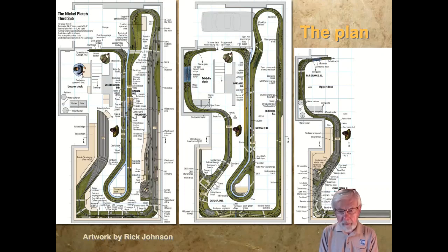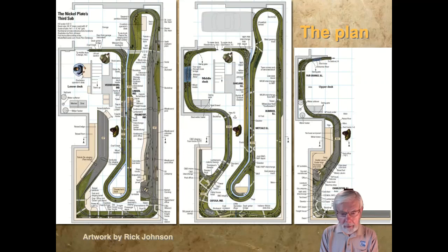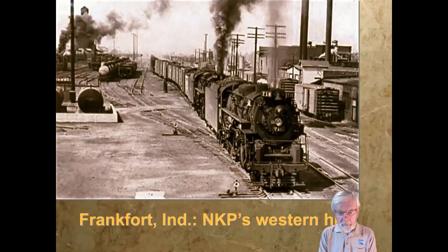We've gone from everywhere east of Frankfort, Indiana, over the third subdivision of the St. Louis line, all the way to Charleston, Illinois. Everything from Charleston west to St. Louis is right behind my head in the staging yard. Very simple plan. The railroad covers both division points — Frankfort and Charleston — and then everything east and west is handled through staging.